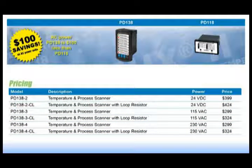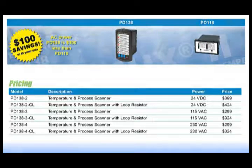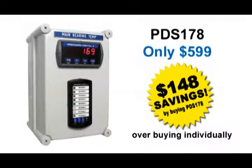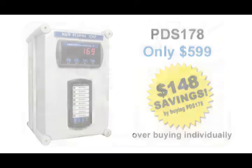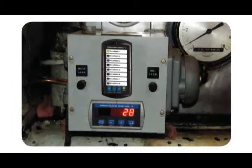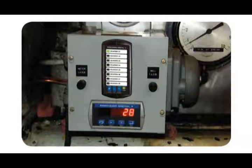Not only does the PD-138 save you $100 over the cost of the old PD-118, if you buy the PD-178 system that I'm showing you here, you save an additional $148 over the cost of the individual parts. Here's the same system put together by a customer to monitor bearing temperatures in his ferryboat system.